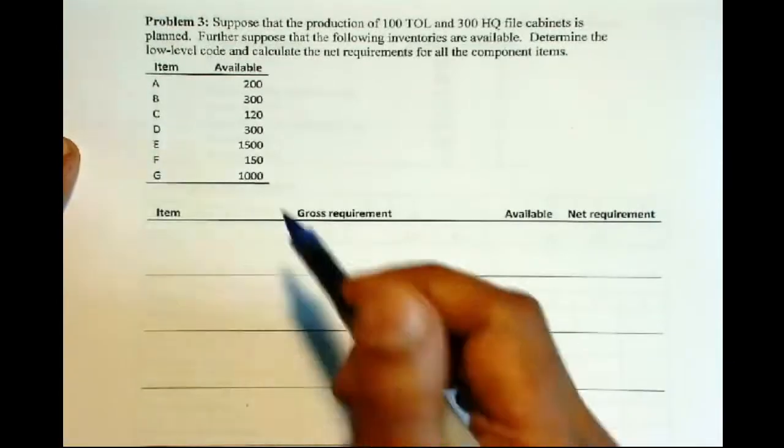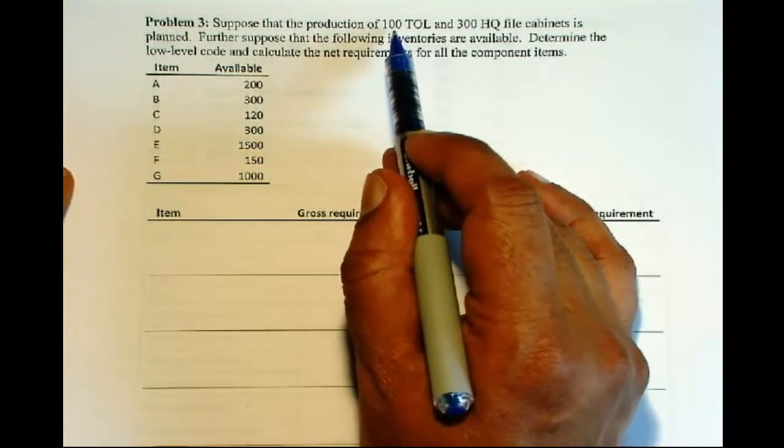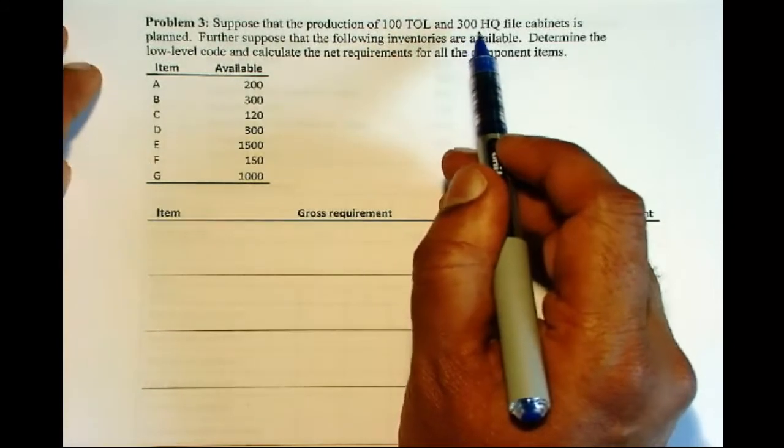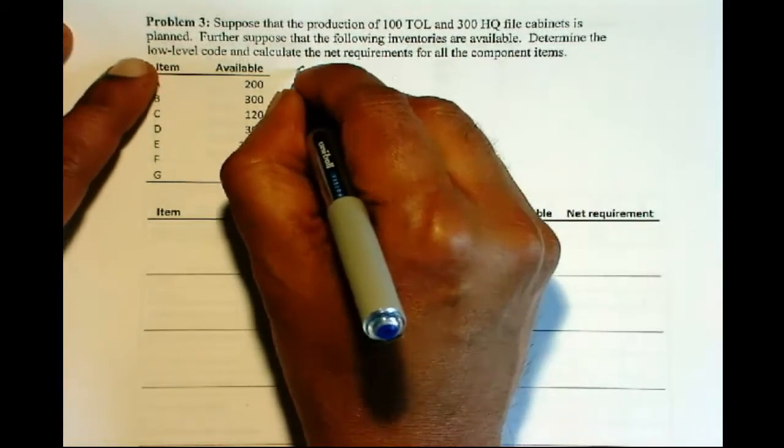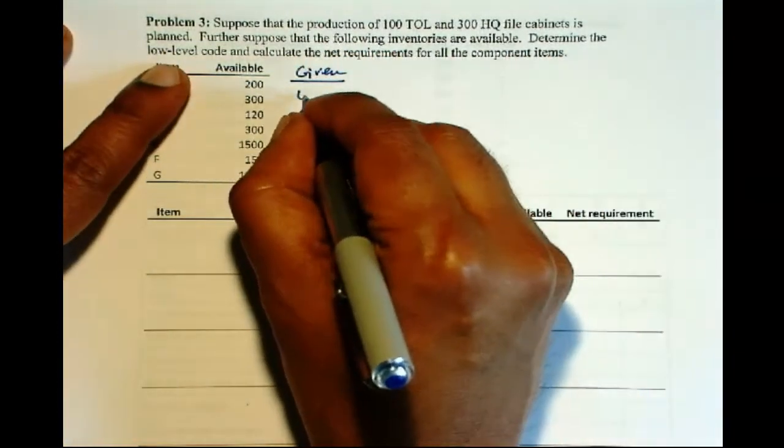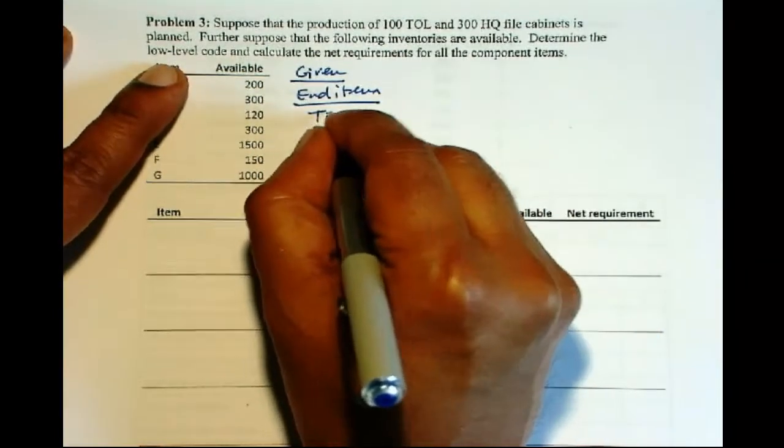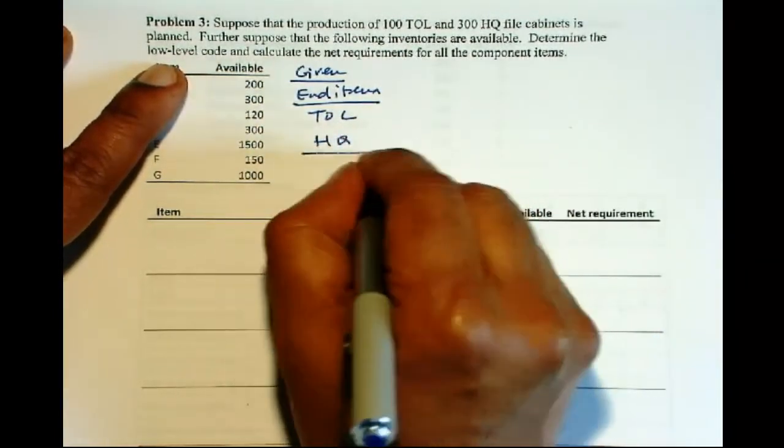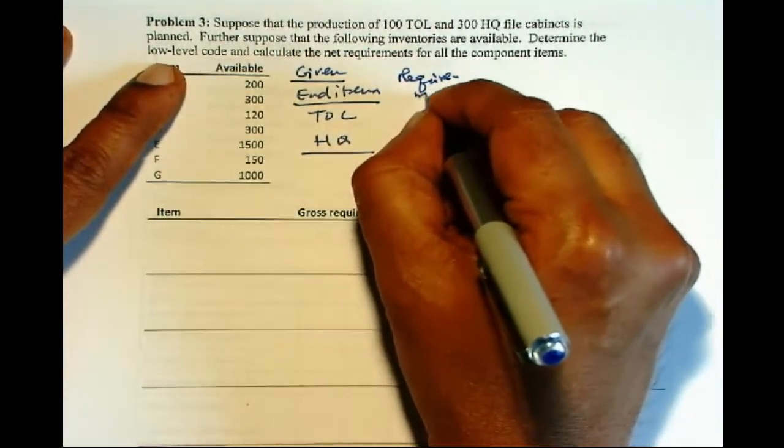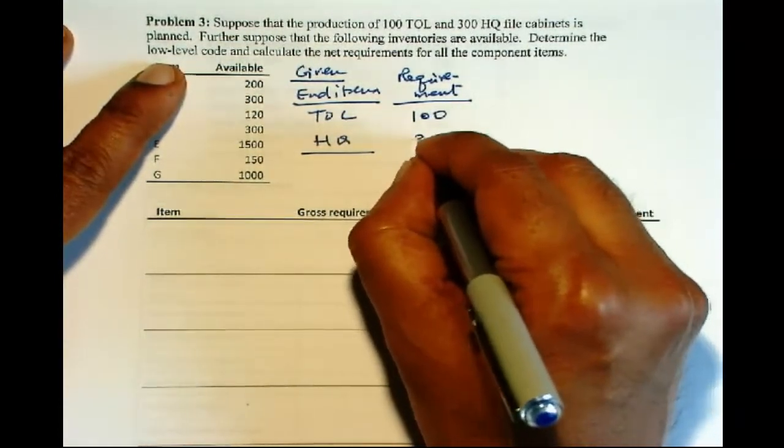So we have the two different models of the filing cabinet. And suppose we want to produce 100 units of TOL and 300 units of HQ. So we are given end item TOL and HQ. Requirement is 100 and 300.